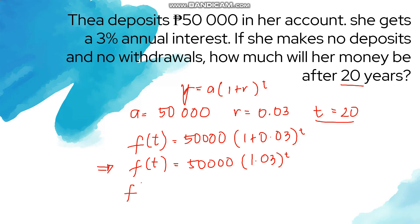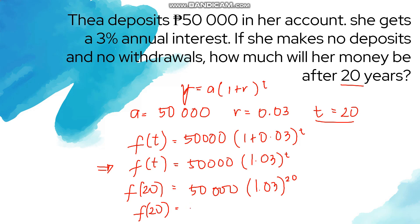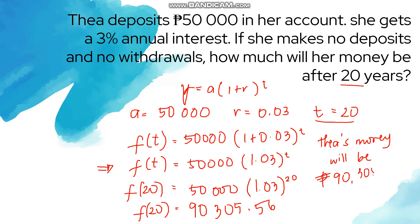Substituting t equals 20: f(20) equals 50,000 times 1.03 raised to 20. Inputting this into a calculator gives 90,305.56 pesos. So Thea's money will be 90,305.56 pesos after 20 years. That's it for today — I hope you learned something about exponential models and how to use exponential functions in different word problems. See you next time.